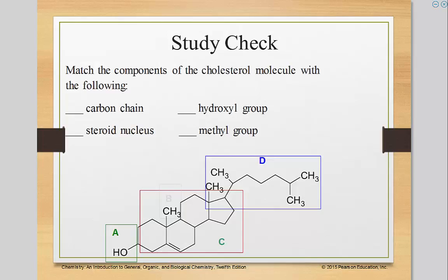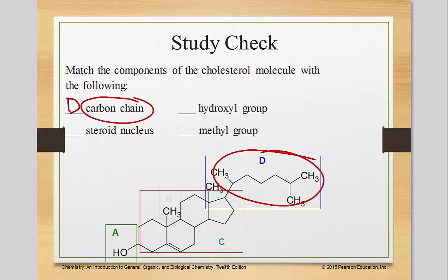Let's see what different portions make up cholesterol. The carbon chain is D — this is the carbon chain right here. This is called the steroid nucleus. It's 4 rings labeled A, B, C, and D.